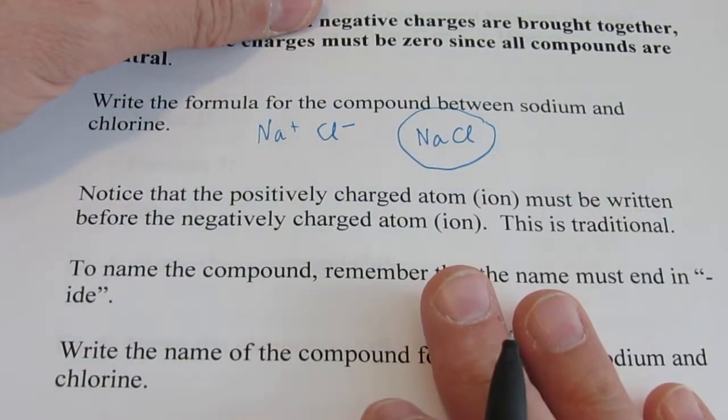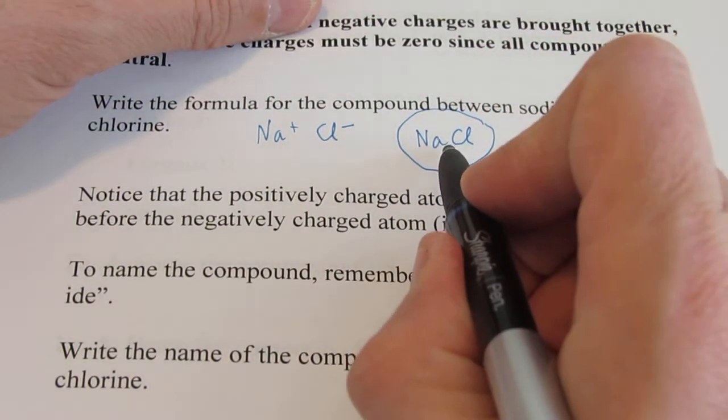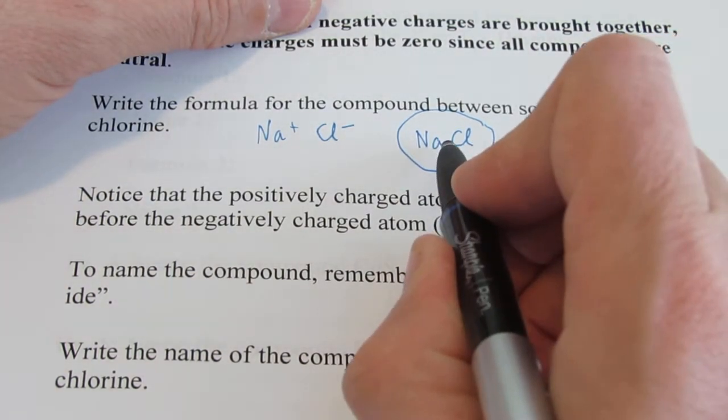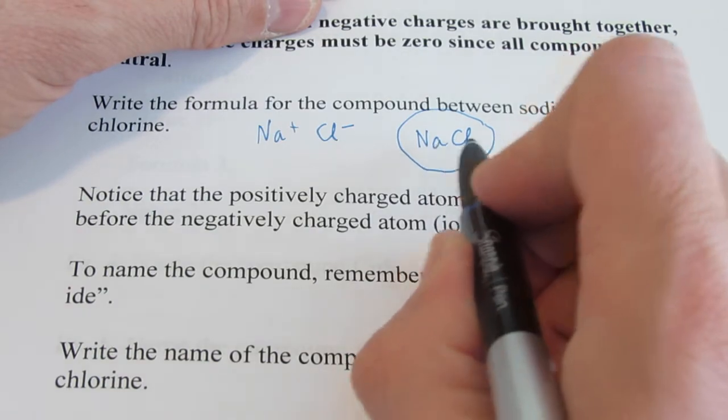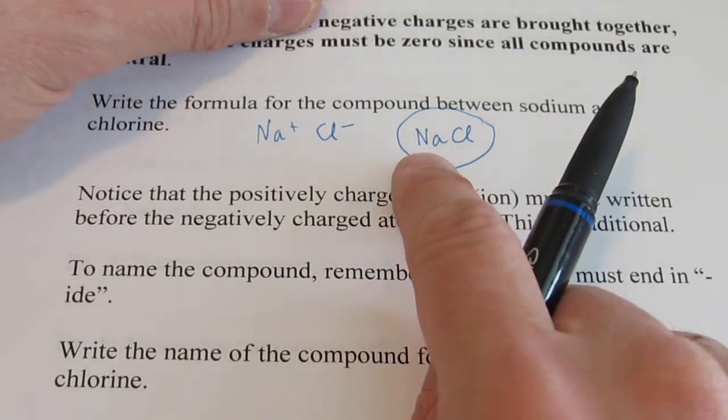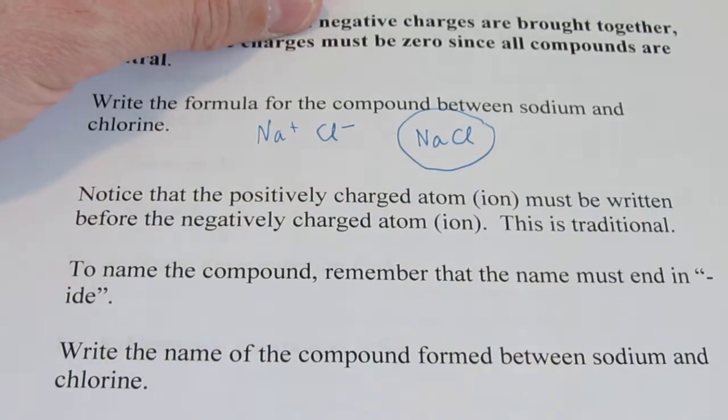If I needed more than one, I would add a subscript next to the element that I needed more than one of. But since I only need one sodium and one chlorine, so that the charge adds up to zero, the formula is simply NaCl.